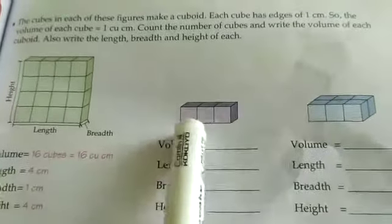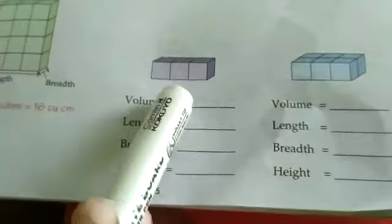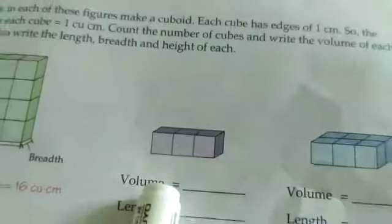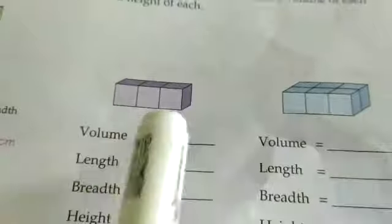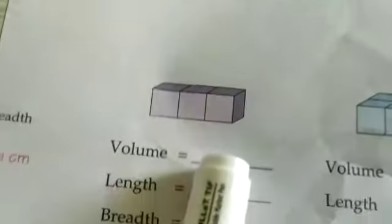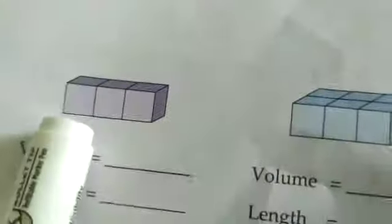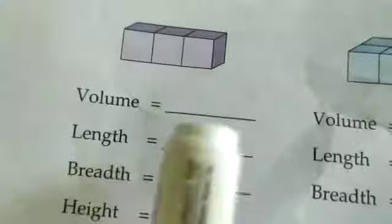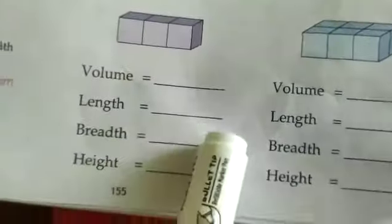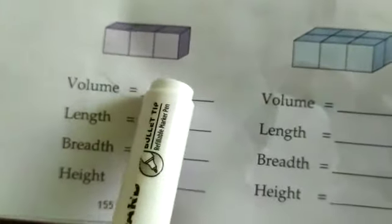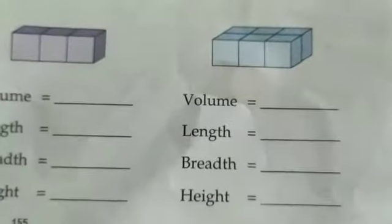Now see this one — this is also a picture of a cuboid with 3 cubes joined together. So the volume is 1, 2, 3 — three cubes — that is 3 cubic cm. Length is 3 cm, breadth is 1 cm, height is 1 cm. So 3 × 1 × 1 equals 3 cu cm. I think you have understood. This is the volume of a cuboid.